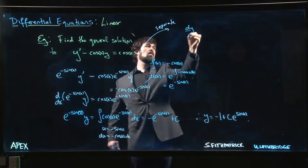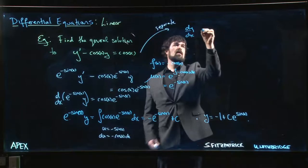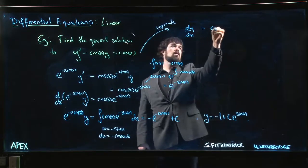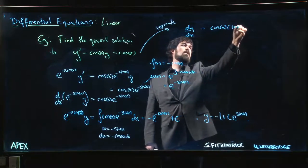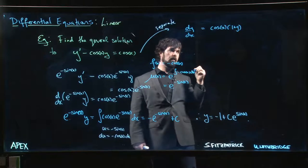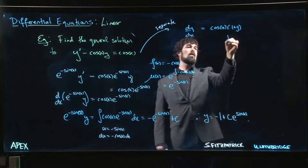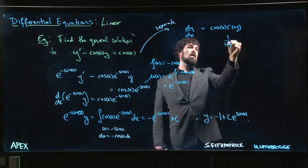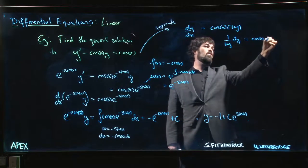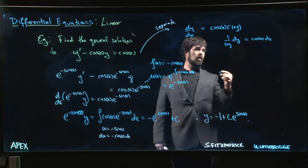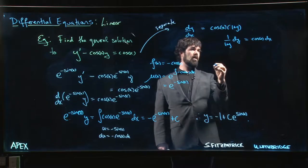So if we treat this as a separable equation, we have dy dx is equal to cos x times 1 plus y. So 1 over 1 plus y dy is equal to cos x dx. Integrate both sides.